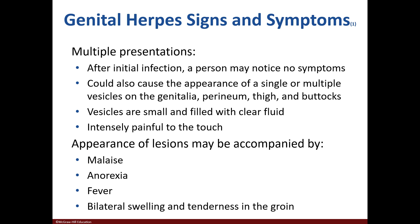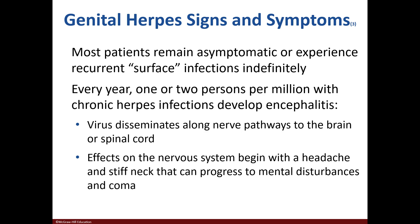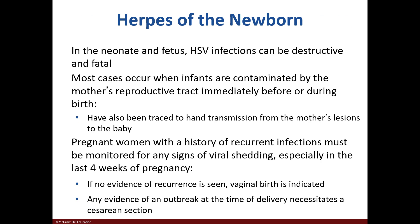Genital herpes may lead to asymptomatic cases, fluid-filled vesicles, malaise, fever, or swelling in the groin. People frequently experience recurrent infections, on average four to five times a year. Some patients may experience encephalitis, which can lead to mental disturbances and a coma. Herpes can also be transmitted to the fetus before or after birth — it can be destructive or fatal. Pregnant women are screened to determine the type of delivery necessary.